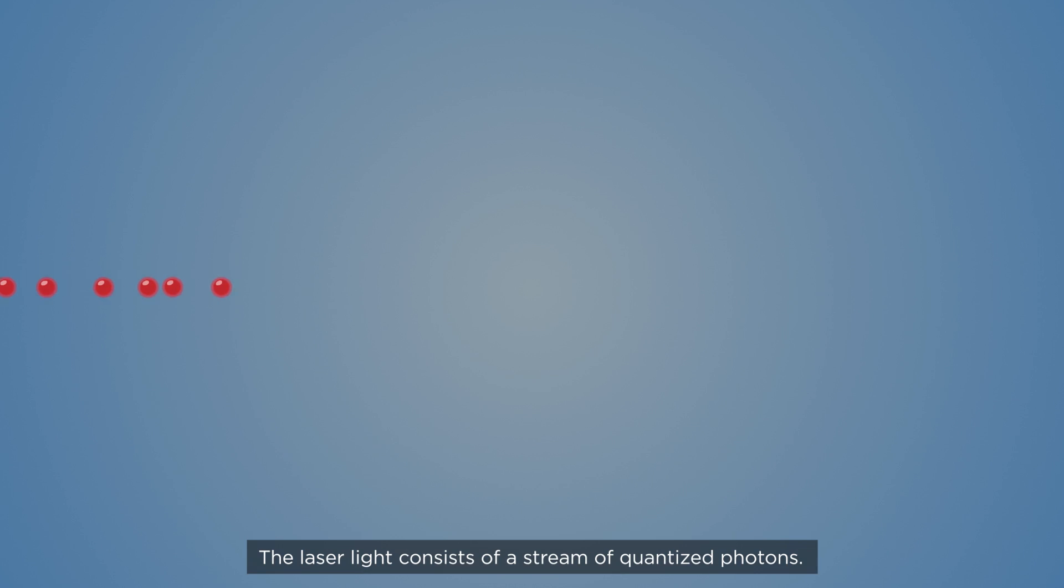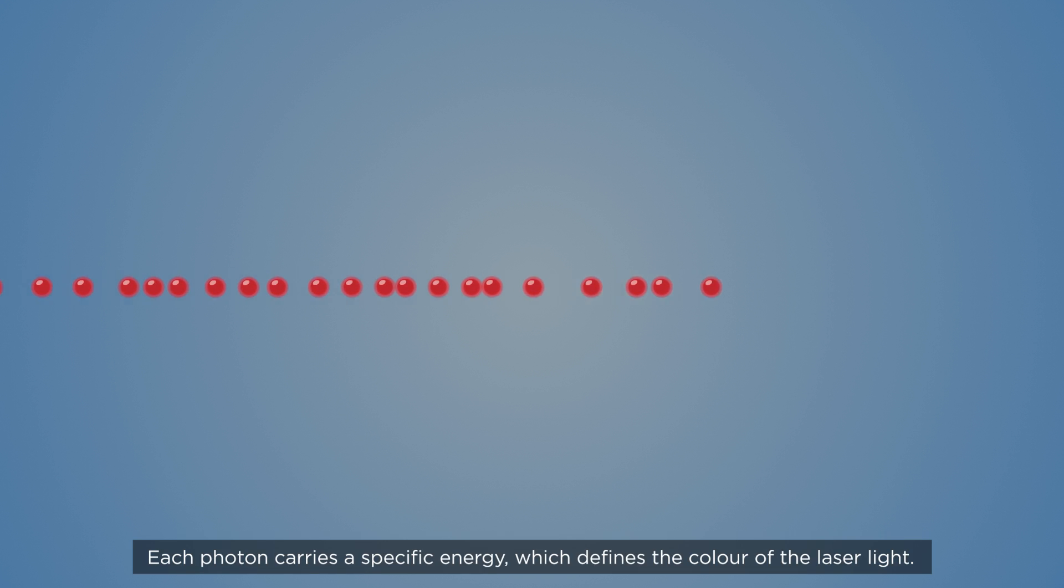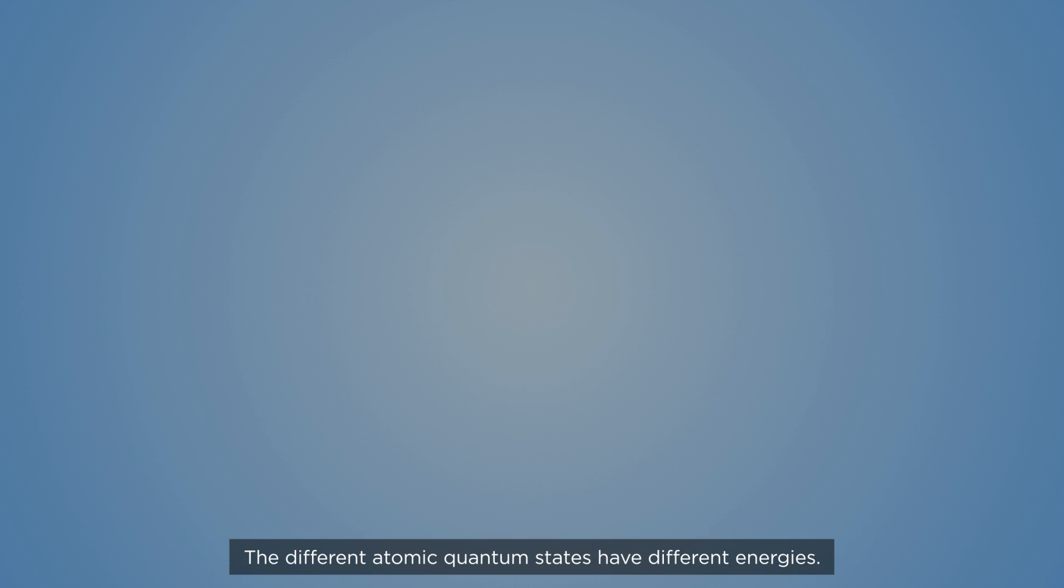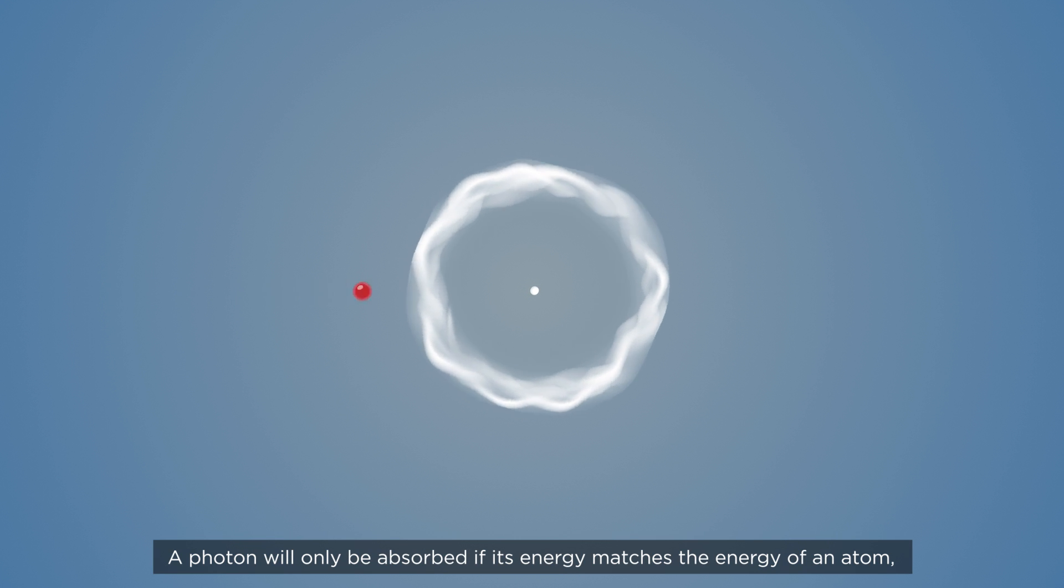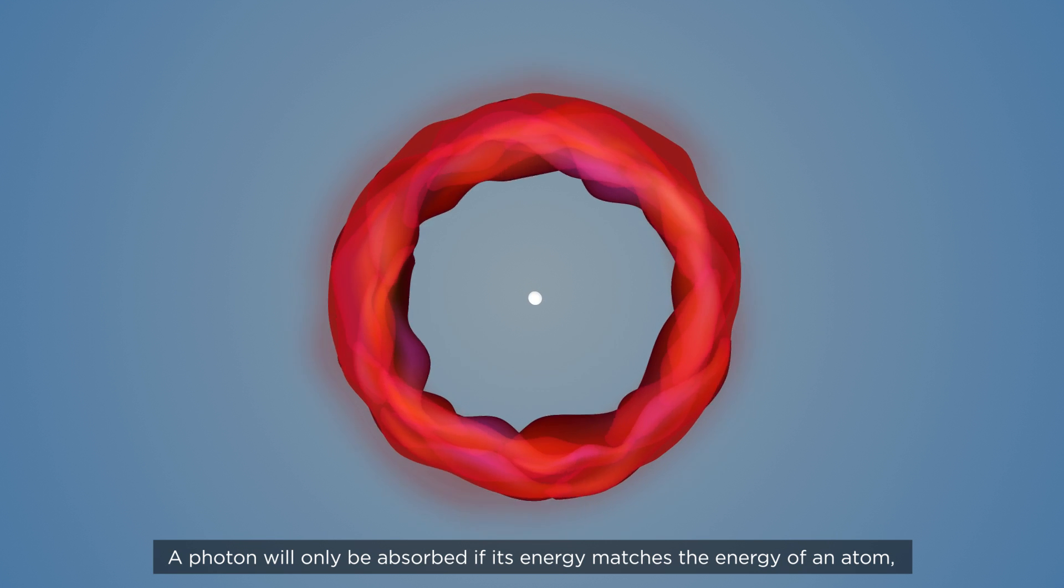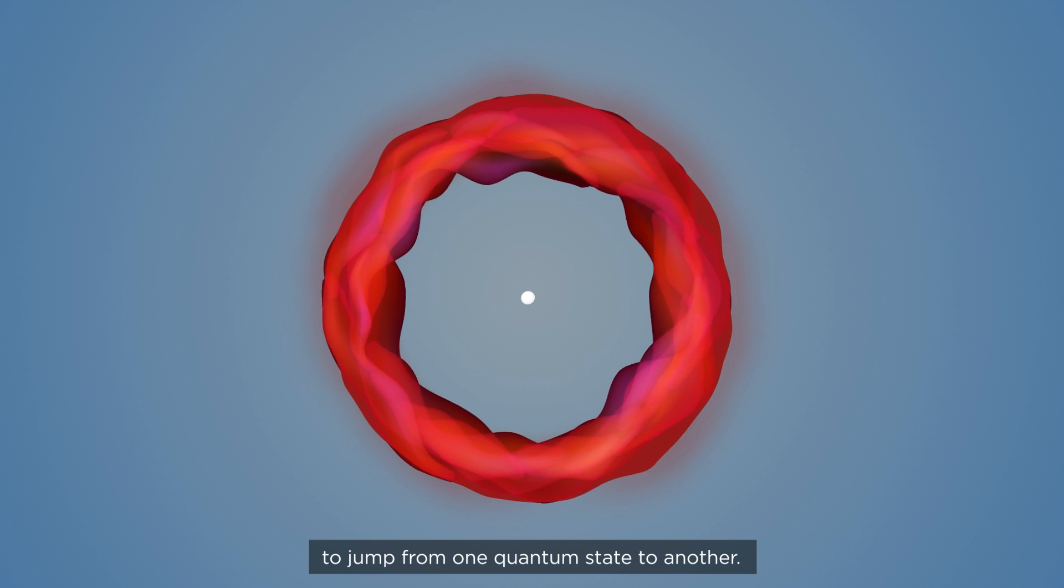The laser light consists of a stream of quantized photons. Each photon carries a specific energy, which defines the color of the laser light. The different atomic quantum states have different energies. A photon will only be absorbed if its energy matches the energy of an atom, to jump from one quantum state to another.